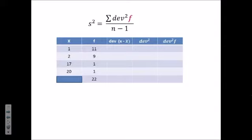Let's fill in these columns. The mean was 3, so the deviation column is score minus the mean, or score minus 3. So 1 minus 3 would be negative 2. 2 minus 3, negative 1. 17 minus 3, positive 14. And 20 minus 3 would be 17.